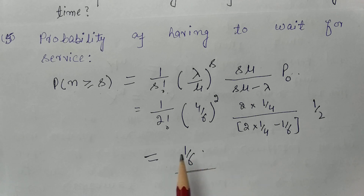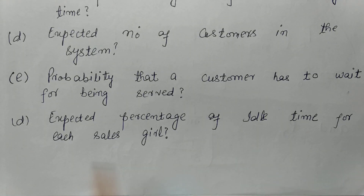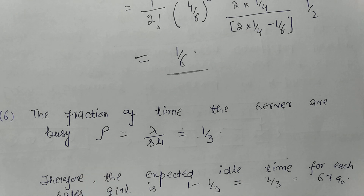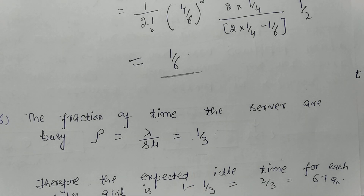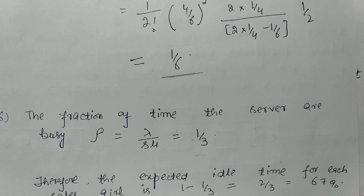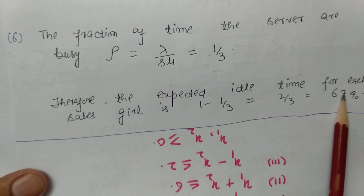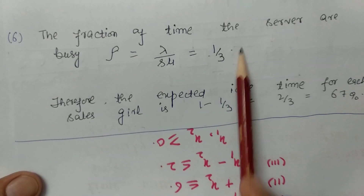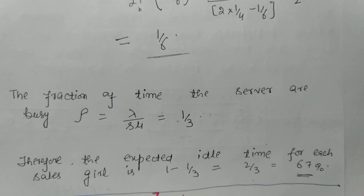Next, the expected percentage of idle time for each salesgirl. First we calculate the busy time: ρ equals λ/(sμ) equals 1/3. This means the salesgirls are busy 1/3 of the time. So the expected idle time for each salesgirl is 1 minus 1/3 equals 2/3, which as a percentage is approximately 67%. That is, 67% of the time the salesgirls remain idle.